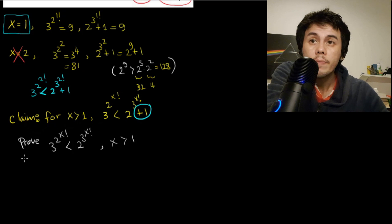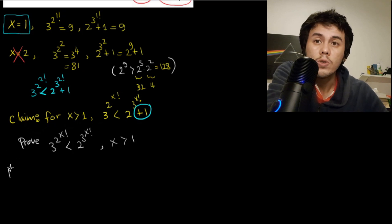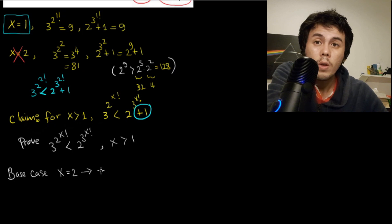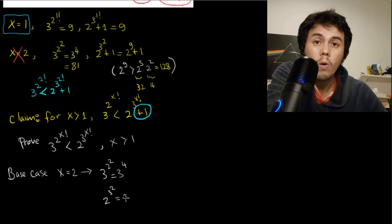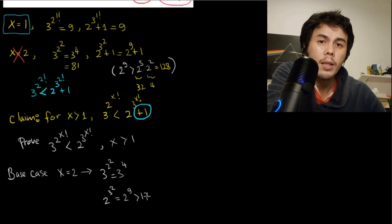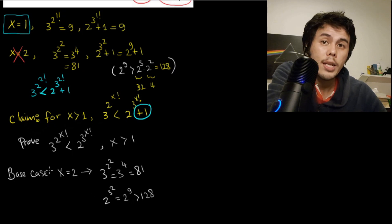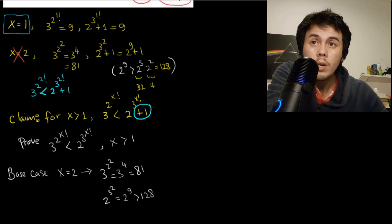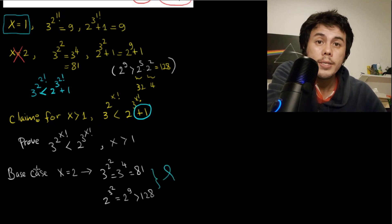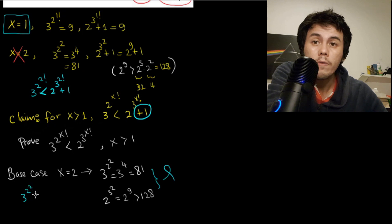We will prove this by induction. The base case is x = 2: 3^(2^2) = 3^4 = 81, and 2^(3^2) = 2^9 = 512. Since 512 > 81, the base case is confirmed — 3^(2^2) < 2^(3^2).